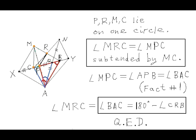Now, angles MPC and APB are congruent since they are two vertical angles. And angle APB is congruent to angle BAC. This is our fact number one. The conclusion is angle MRC is congruent to angle BAC.